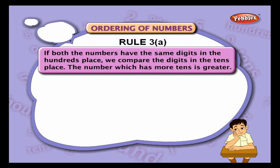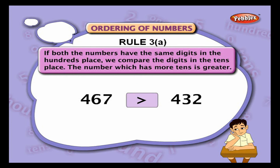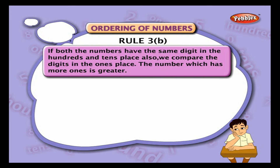For example, 467 and 432: both have four in the hundreds position. Compare the tens place — there are six tens in 467 and three tens in 432. Six is greater than three, so 467 is greater than 432.